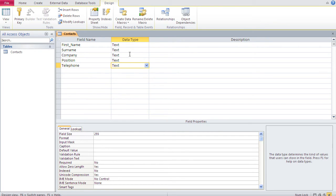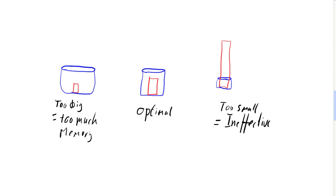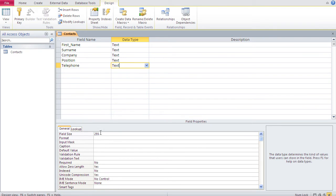Now comes the last step: field size — how big is each field? Here I have three examples. A field that is too big consumes too much memory. Access sets each text field to a default size of 255, meaning 255 letters would fit in that field.